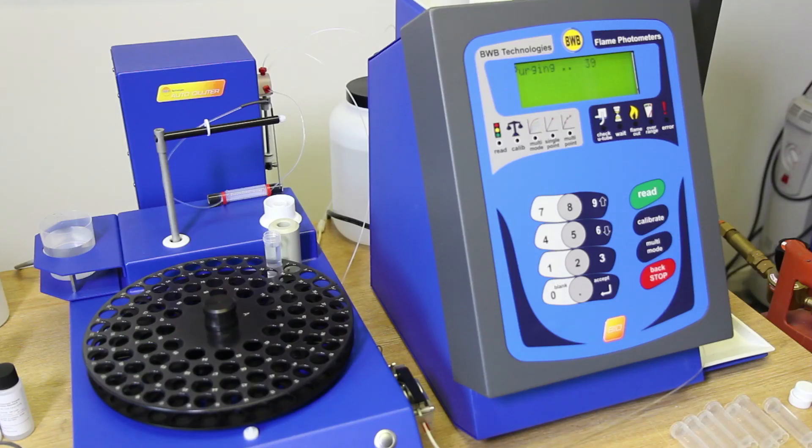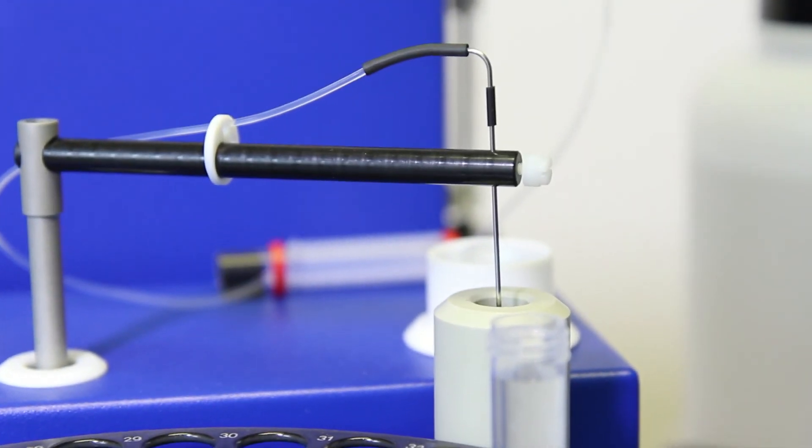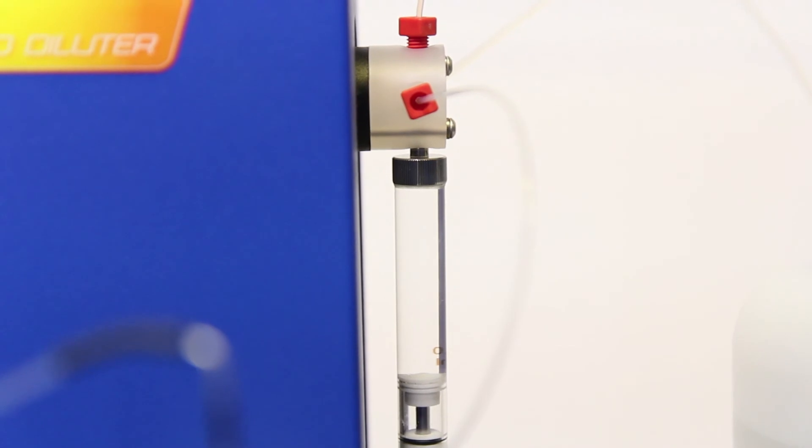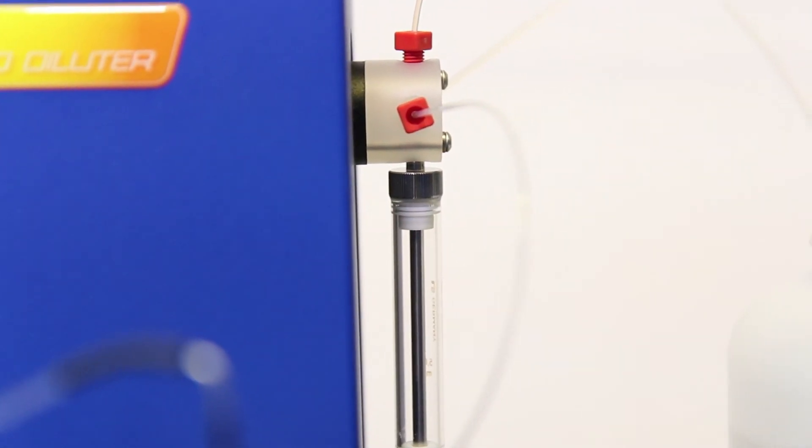The AFHS will then proceed to take a reading and recalibrate the curve. The process only takes a couple of minutes and helps to ensure that your BWB Bio is running at peak accuracy.